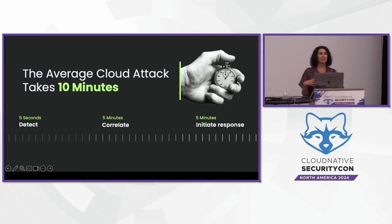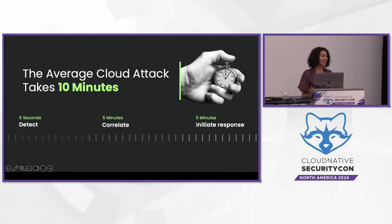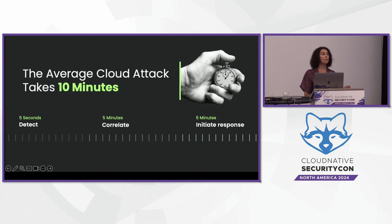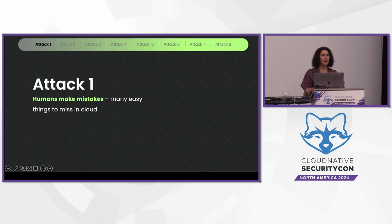Maybe the biggest challenge of all is the speed of cloud attacks. Sysdig's threat research team has found that on average cloud attacks take 10 minutes to execute start to finish, which means we need to defend at a faster speed than that. When it comes to identity and correlation, identities can really help because they can track somebody doing something malicious across accounts or detection boundaries and paint a picture of an attack.